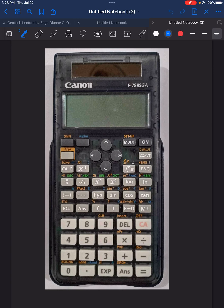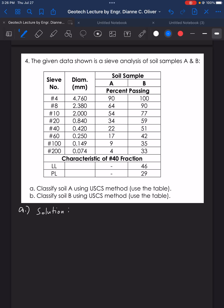There's just a minor difference here that we wanted to point out. And at the same time, we will try to resolve this problem for those who want to watch the solution directly. Here we have the given data in a sieve analysis of soil samples A and B. For the sake of this video, we will just solve letter A, classifying soil A using the USCS method.